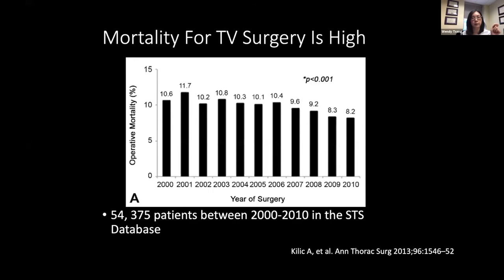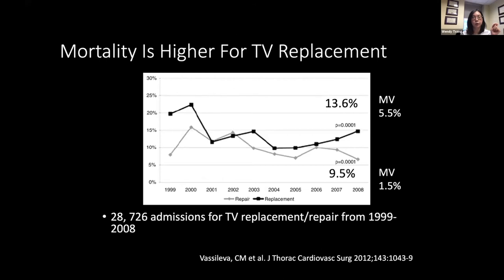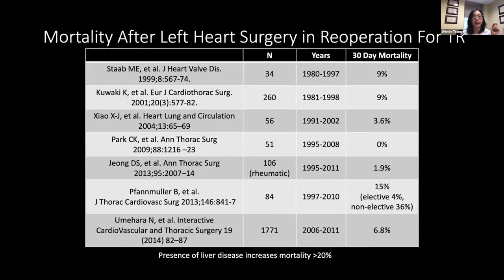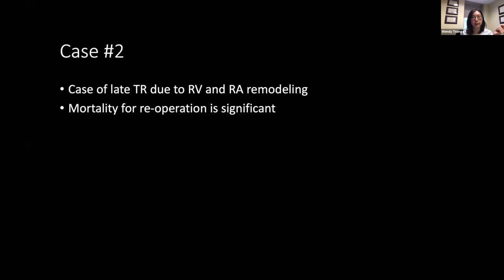What is mortality for isolated tricuspid surgery? In the STS database, it's 8%. For tricuspid valve replacement, it's even higher — about 13% versus 9.5% for repair. These rates are significantly higher than mitral valve surgery mortality. For re-operation for tricuspid regurgitation after left heart surgery, mortality is about 9%. Overall, this is a case of late TR due to RV and RA remodeling, and the mortality for re-operation is very significant. The question then becomes whether we should see these patients earlier in their disease process for non-surgical procedures.